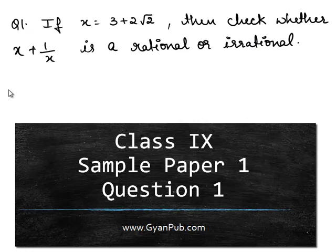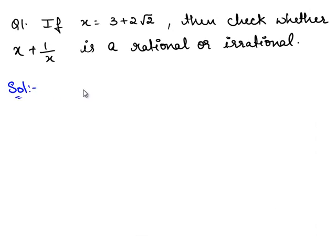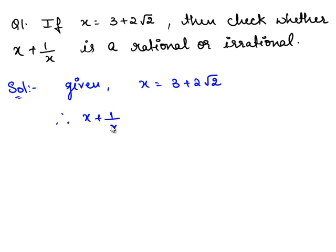So, let us move on to the solution. Given x is equal to 3 plus 2 root 2. Therefore, x plus 1 by x is equal to 3 plus 2 root 2 plus 1 by 3 plus 2 root 2.